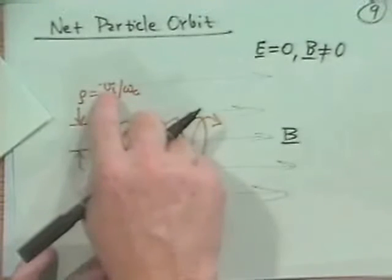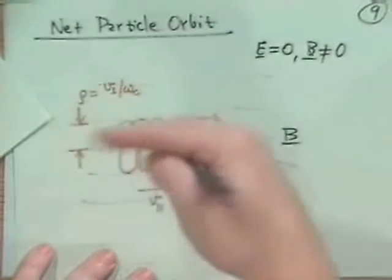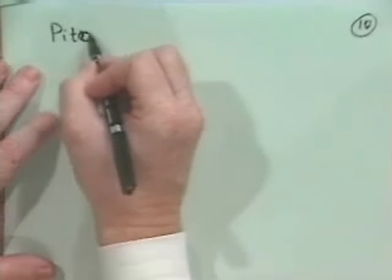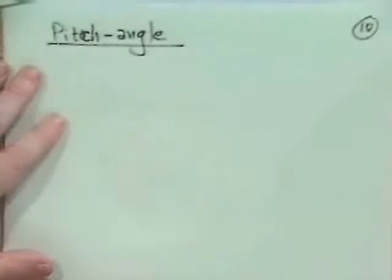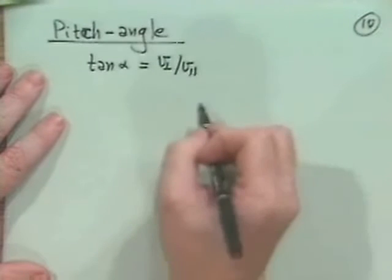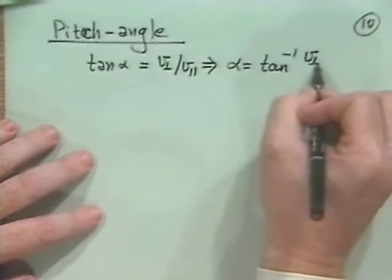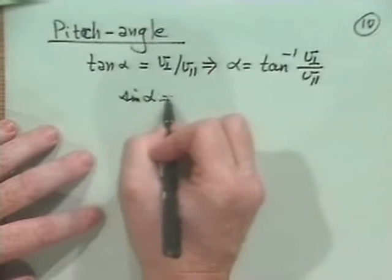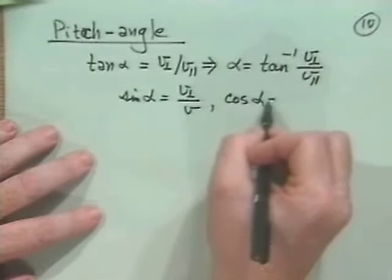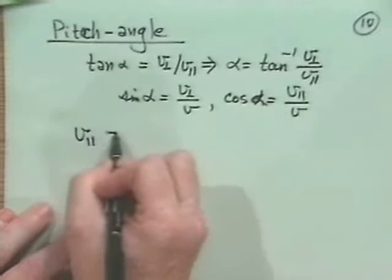Now, there's a sense here of something which is called a pitch angle, which we'll come back to. Imagine if V parallel was much greater than V perp, I'd be moving mostly along field lines and only a little bit perpendicular. Whereas if I was moving mostly perp, I'd have a very tight helix and I'd hardly be moving along at all. So people often define something which is called a pitch angle. And what that is is they define the tangent alpha, where alpha is going to be the pitch angle, is V perp over V parallel, and then you can write that alpha is equal to the arc tangent, tan minus 1, of V perp over V parallel, and therefore sine alpha is equal to V perp over V, and cosine alpha is equal to V parallel over V.